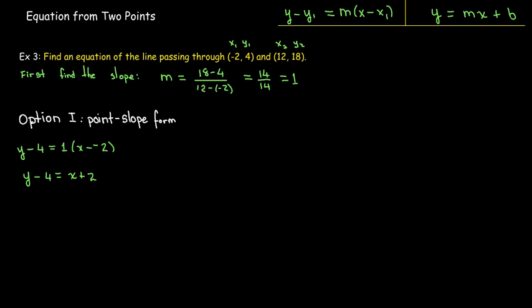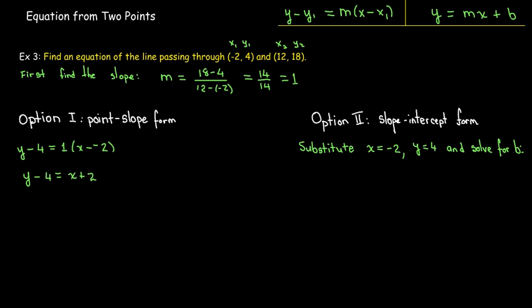Or I have a second option. I could find slope-intercept form. And how do I do that? Well, I have two points where I know the x and y value. I'll use the first one. I can substitute x equals -2, y equals 4 into y equals mx plus b. So I'm going to put m equals 1, x equals -2, y equals 4.